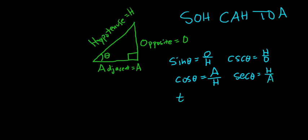And then tangent. So it's SOH-CAH-TOA. OA. So it's O over A. And so cotangent is AO. So A over O.